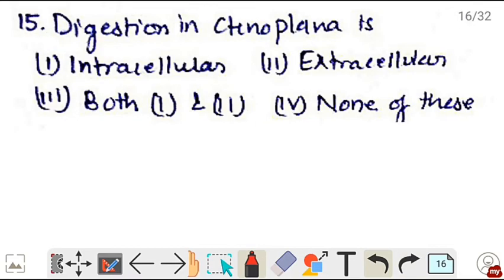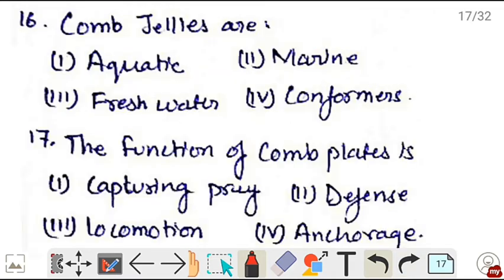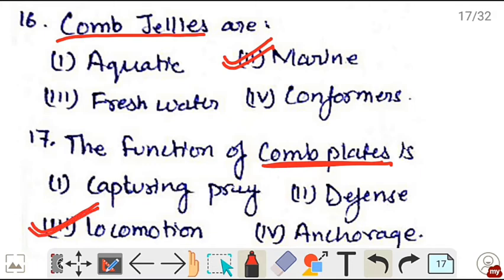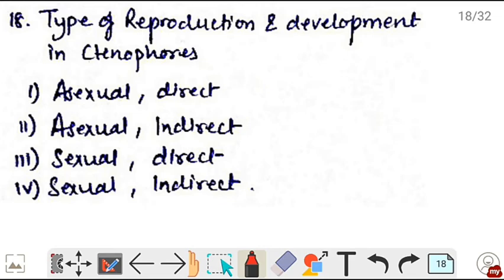Next, digestion in Ctenoplana is - Ctenoplana is also a ctenophore, and in ctenophores digestion occurs in two ways: intracellular and extracellular. Correct is option 3, both 1 and 2. Next, comb jellies are - comb jellies are the common name of ctenophores, and ctenophores are exclusively marine. Not aquatic, because aquatic includes both freshwater and marine. Correct is option 2, marine.